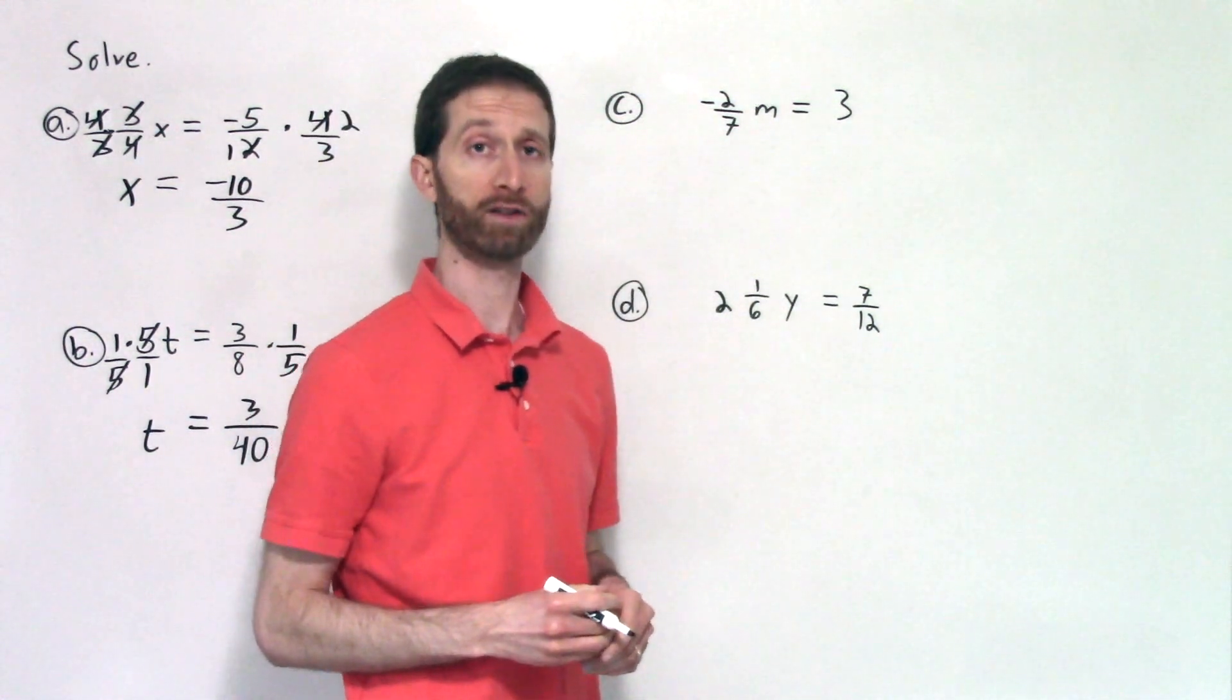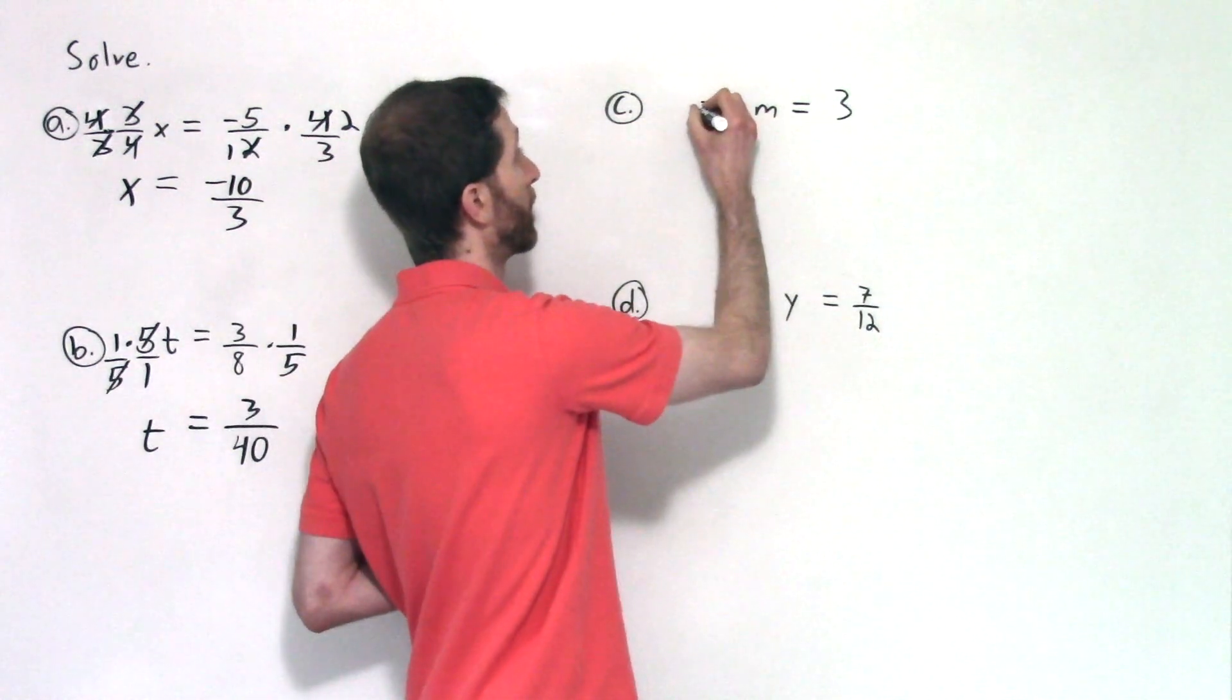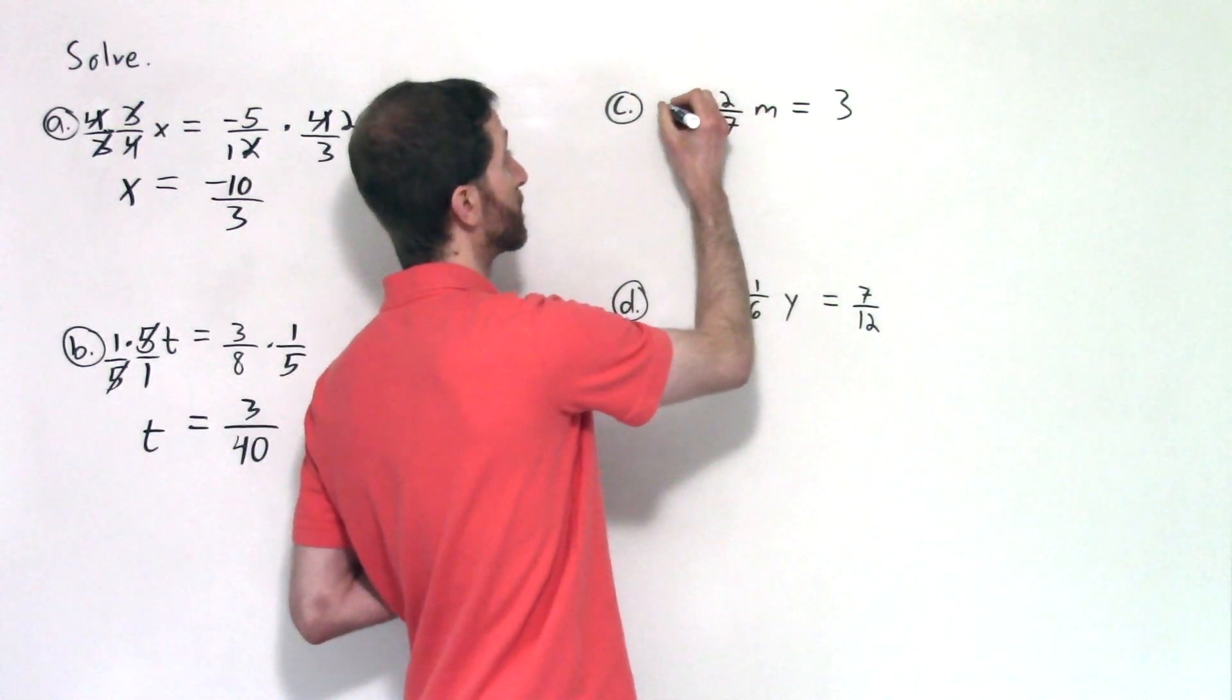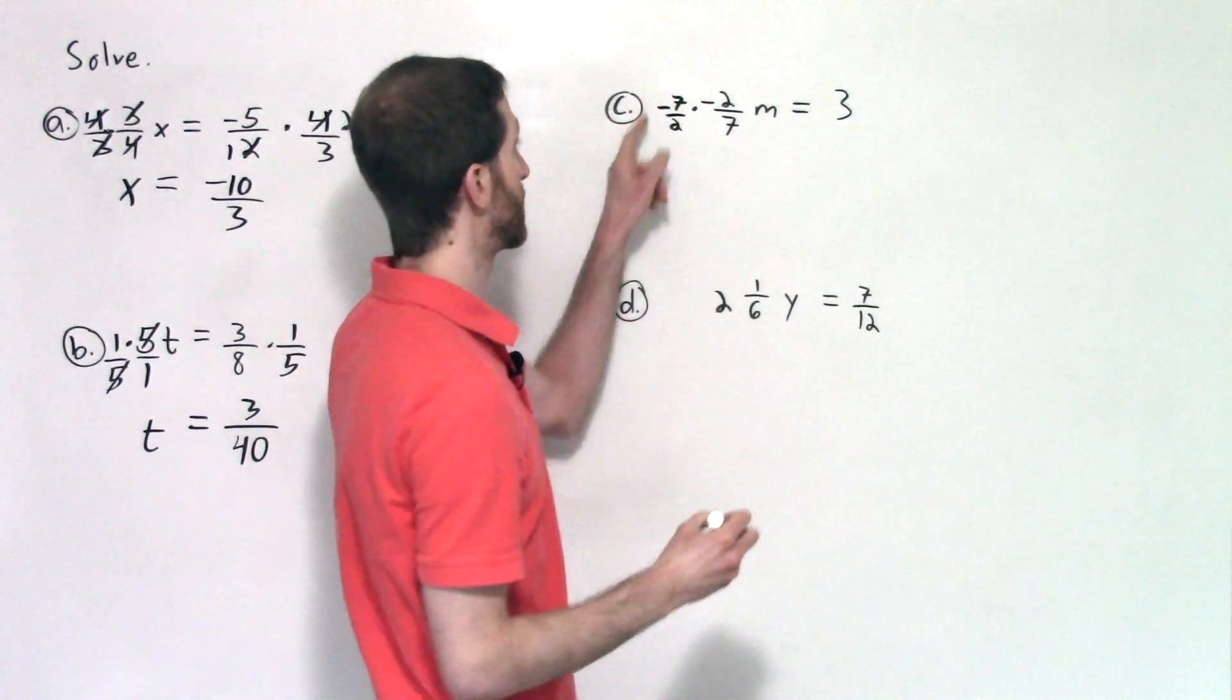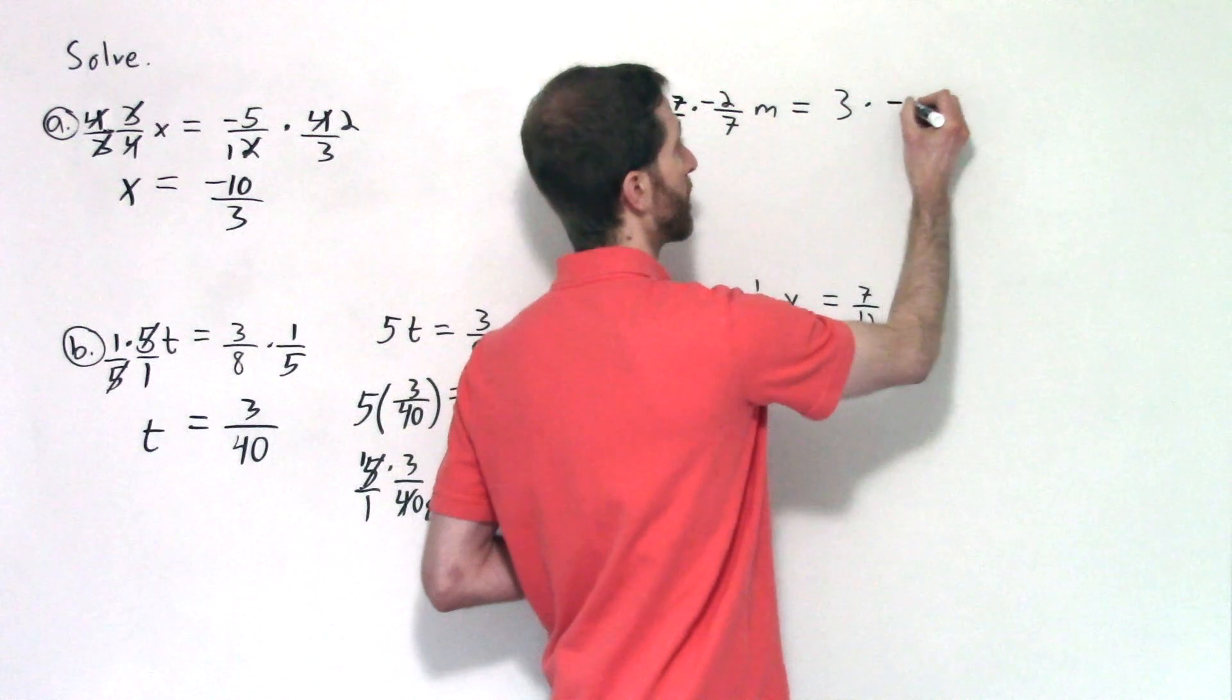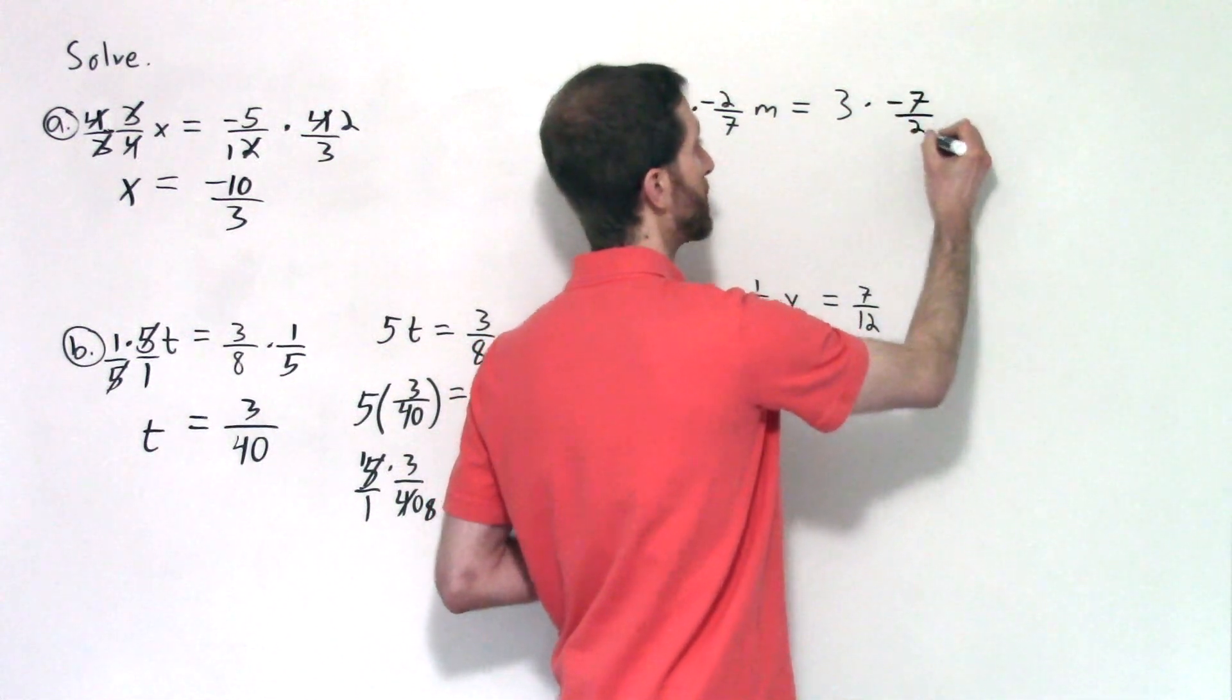Well, the same way we've been dealing with other fractions. You multiply by the reciprocal, which is going to involve that negative. So I'm going to multiply both sides by negative seven halves. All right, that will take care of the negative as well. What I do to one side, I do to the other.